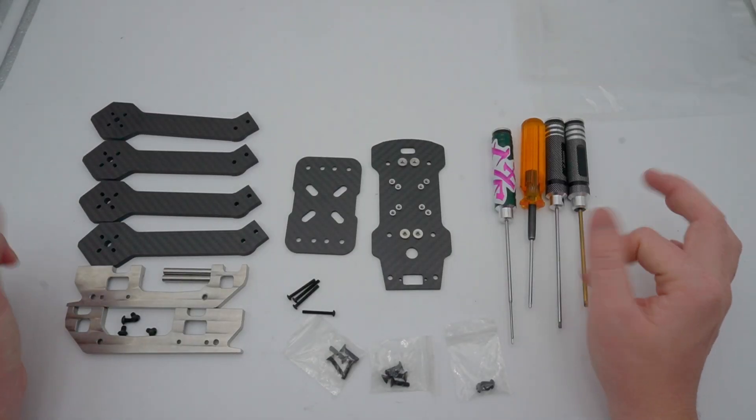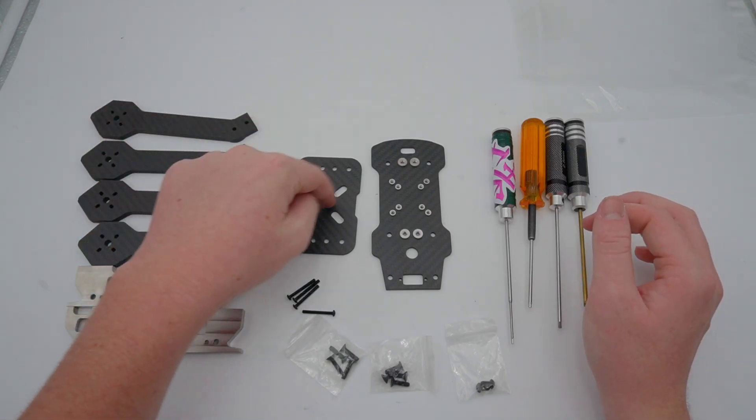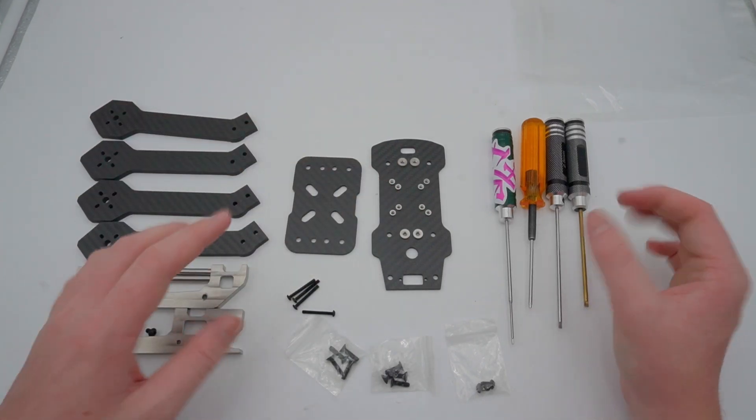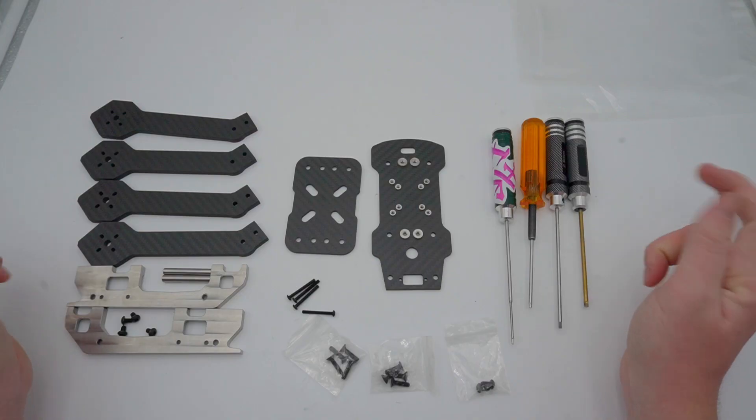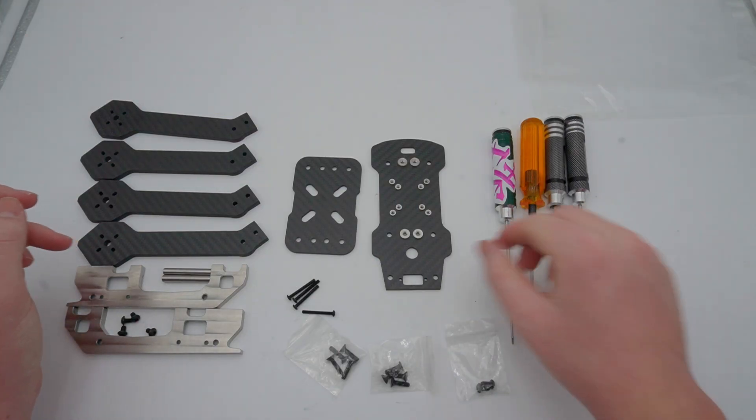Okay, so this is what you're going to be given when you get a Pro-Spec frame kit. You're going to get four arms, bottom plate, mid plate, and your canopy and all of your hardware. You're going to need a 2.5 millimeter driver for this build. Yeah, let's get straight into it.